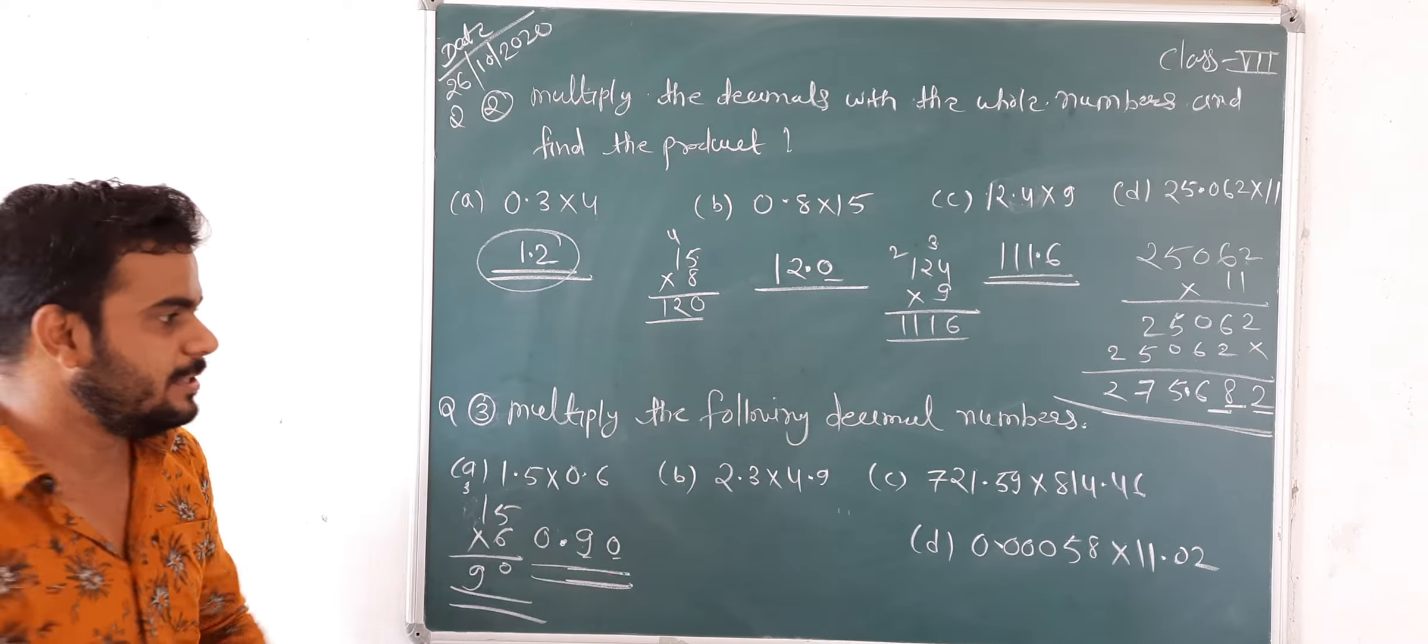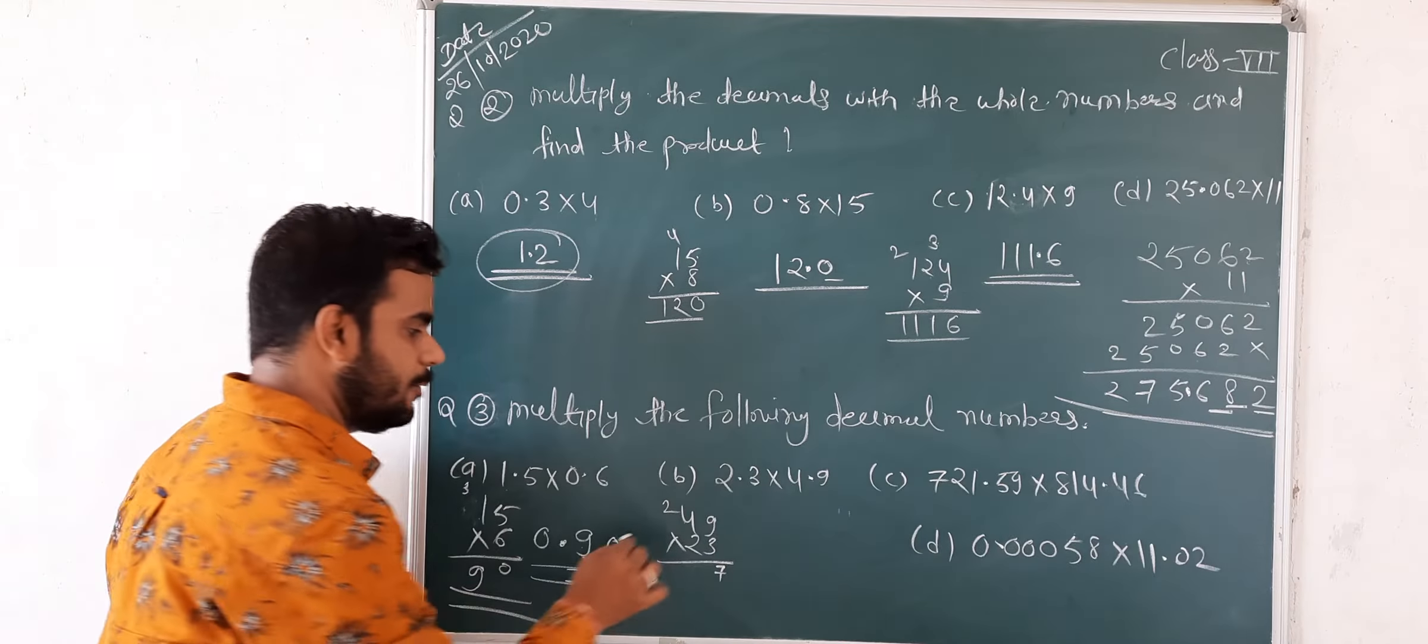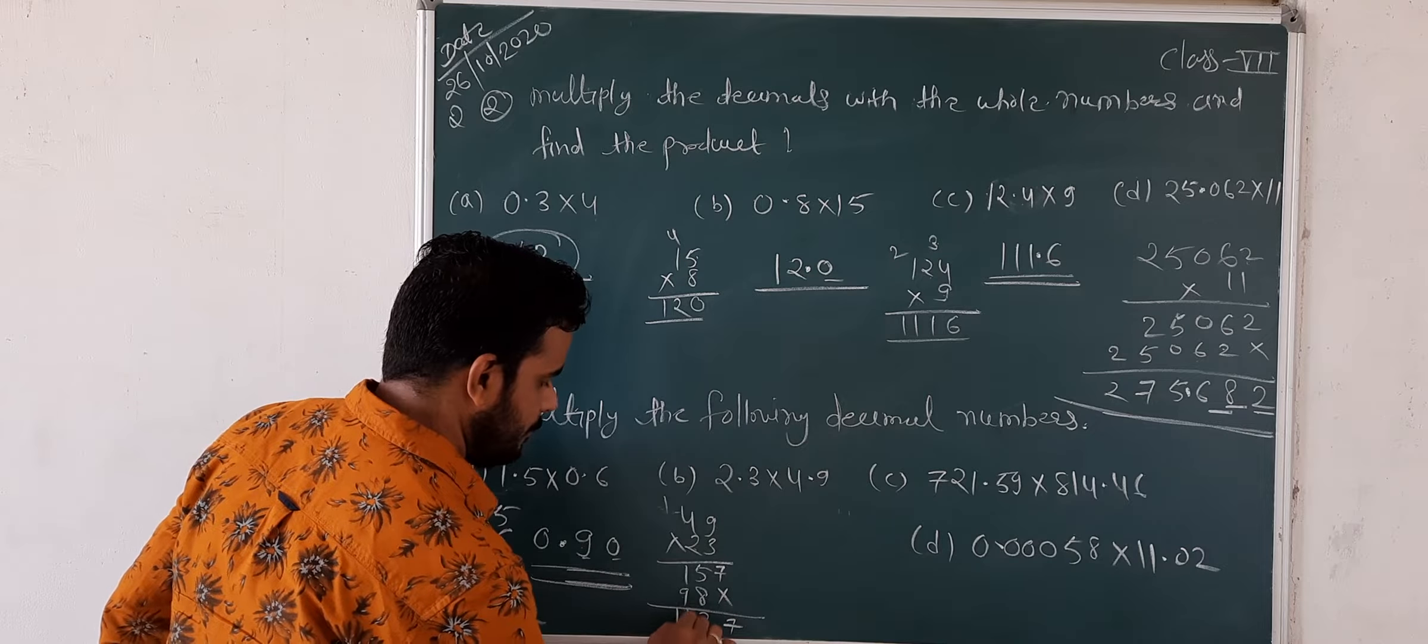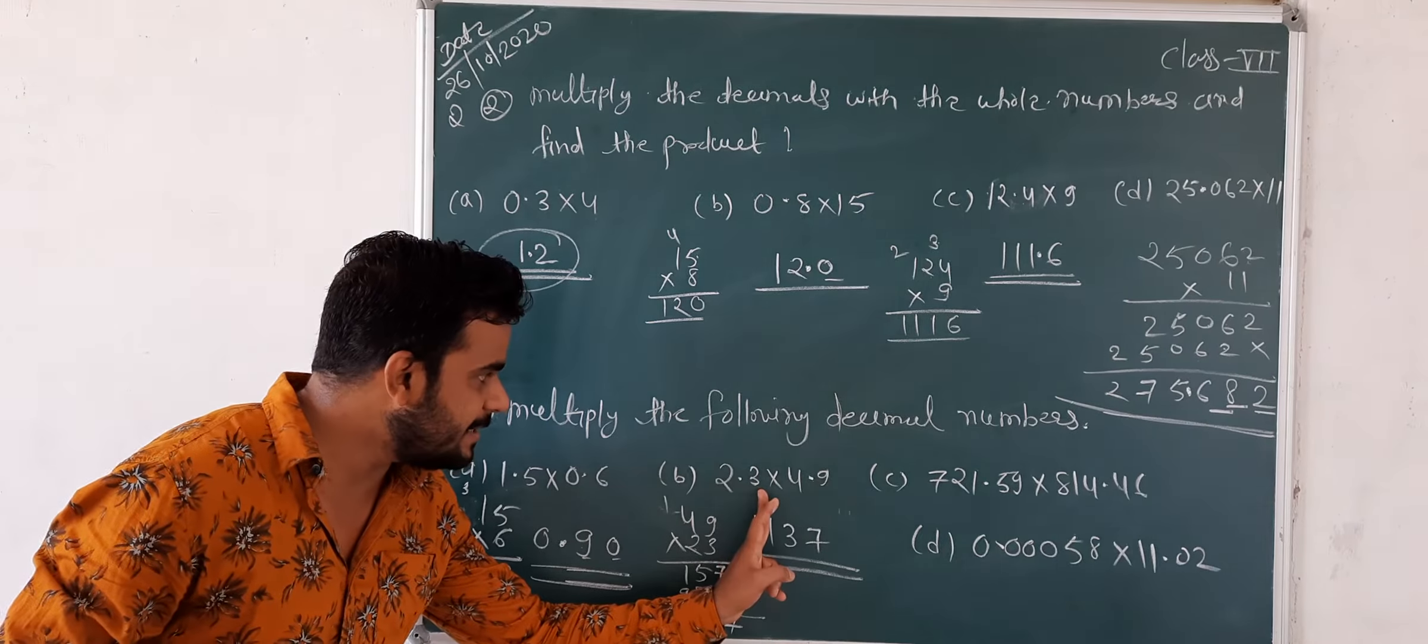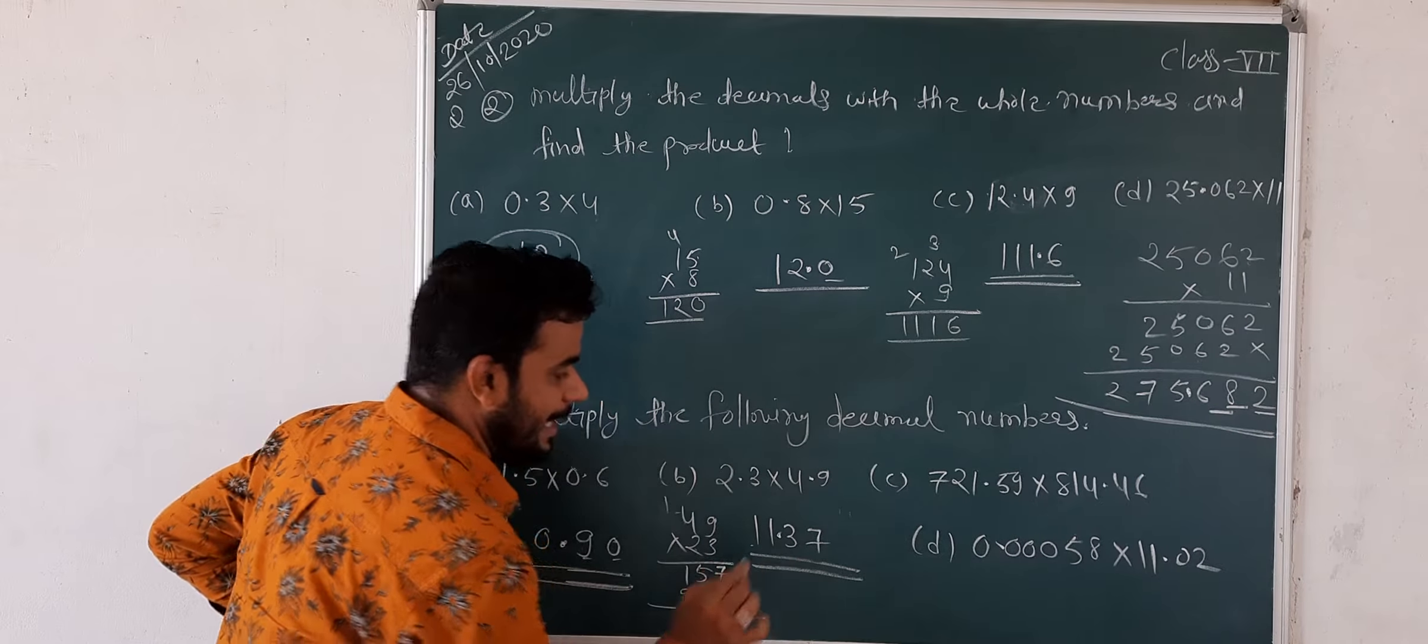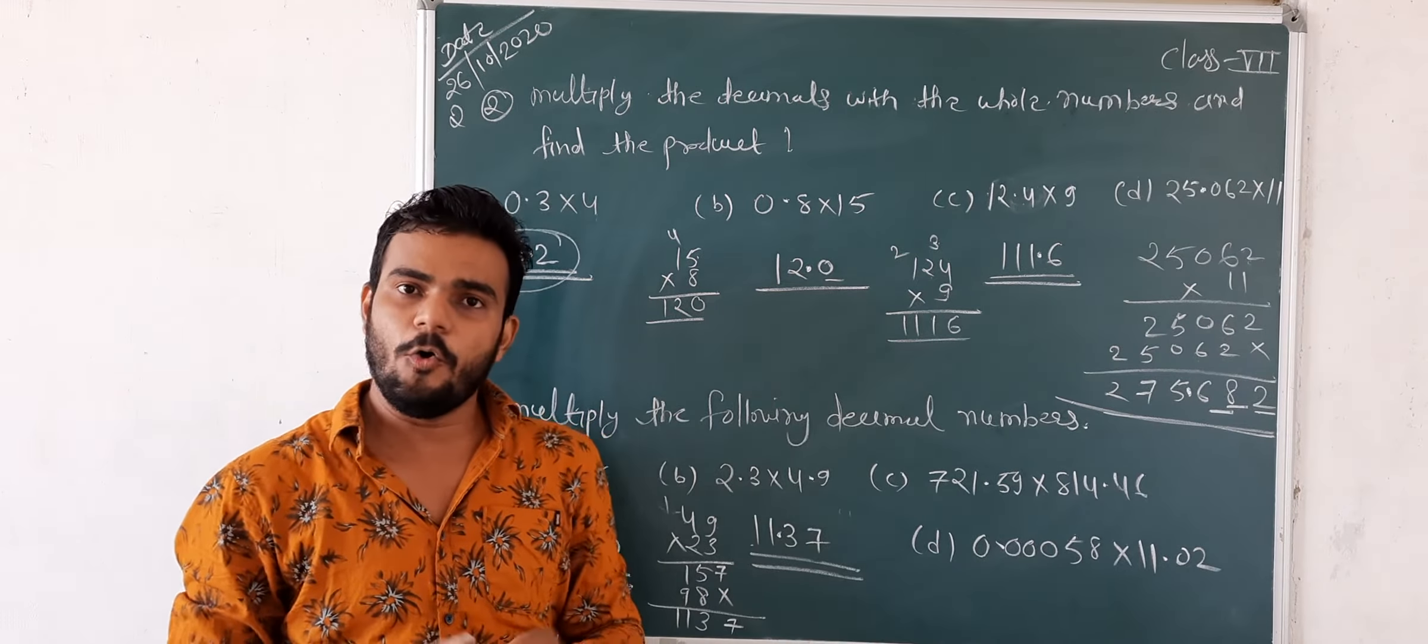15 x 6. 6 x 5 is 30, carry 3. 6 x 1 is 6, plus 3 equals 9. Answer is 90. One place is here and one place is here. Point ke baad ek place hai yahan pe bhi. Total two places are there. Then you remove two places after put the point: 0.90. Next is here, 4.9 x 2.3. Multiply and count places: one here, one here, total two. Answer is 11.27. Same as you do next, c and d of second one is your homework.